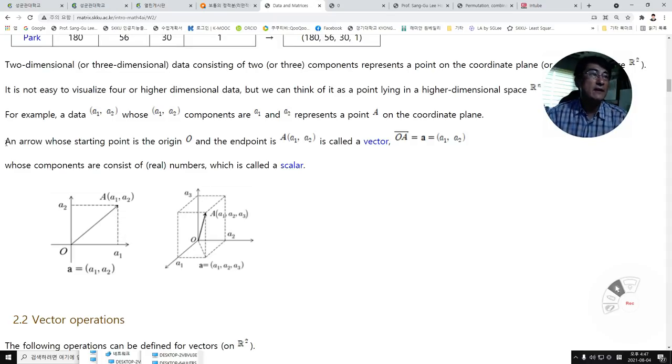An arrow whose starting point is the origin O and the endpoint is A is called a vector, which is represented as OA bar or bold A, whose components consist of real numbers A₁ and A₂. The components A₁ and A₂ are called scalars.